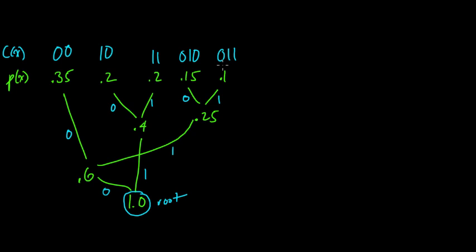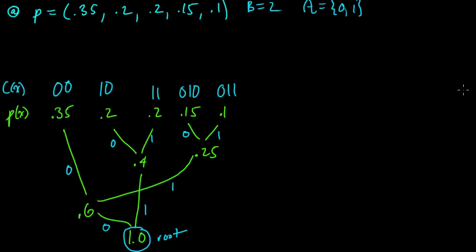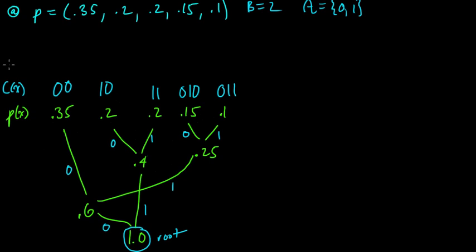So that defines our code words in the procedure. And you can see immediately that it's always going to be a prefix code because there's no code word that's on the path from the root to another code word. So it's always prefix. Now let's figure out what is its expected length. The length of each of these code words is 2, 2, 2, 3, and 3.